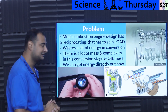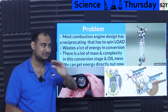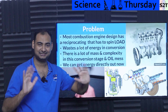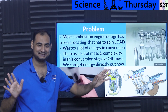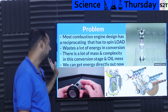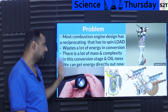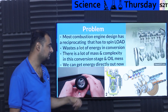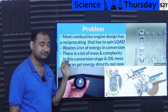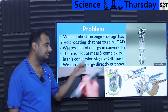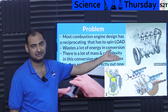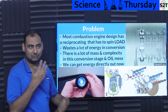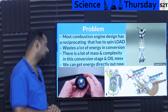That's why jet engines are so efficient — air comes in, air goes out, the end. Nothing else happens. So you have mass, complexity, and a messy conversion stage, plus it requires oil. Most of the oil is in the crank itself; it has to lubricate all those parts.